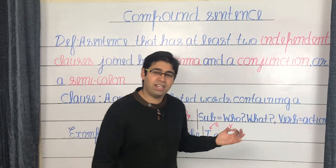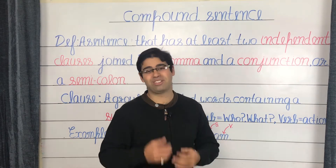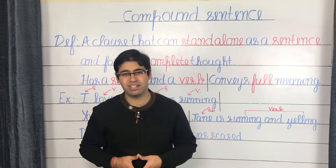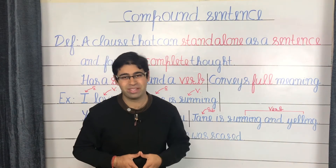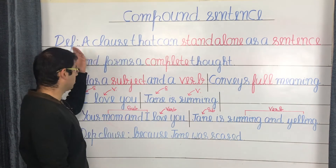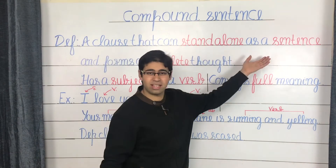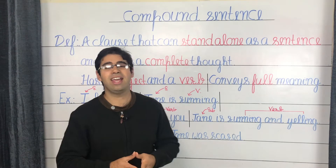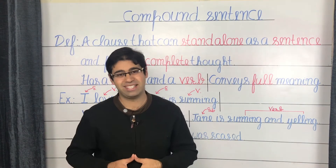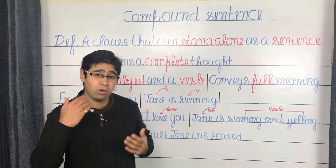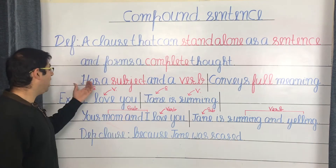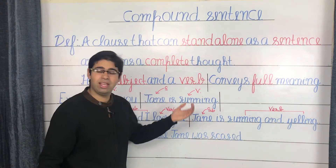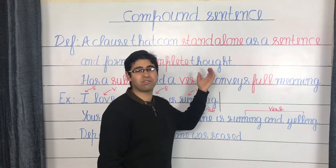Now we are ready to understand what an independent clause is. An independent clause is a clause that can stand alone as a sentence and forms a complete thought. In other words, an independent clause is a complete sentence. Since it's a variety of the basic clause, it too has a subject and a verb, and in addition to that, it conveys full meaning.